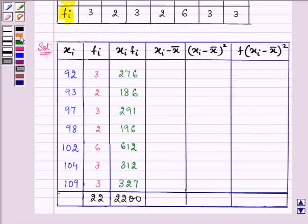Now here in the next step we need to subtract the mean that is 100 from each xi. And on doing so we have 92 minus 100 giving us minus 8, 93 minus 100, minus 7, then minus 3, minus 2, 2, 4 and 9.